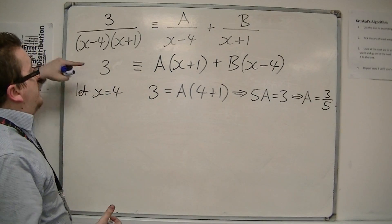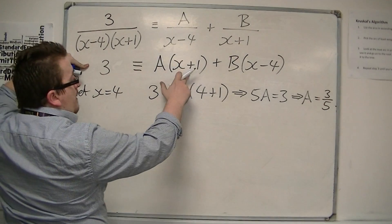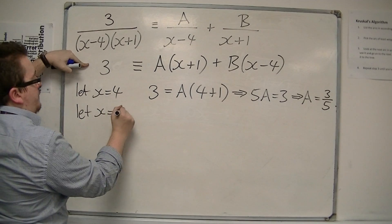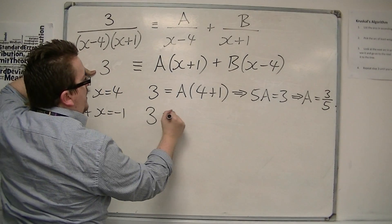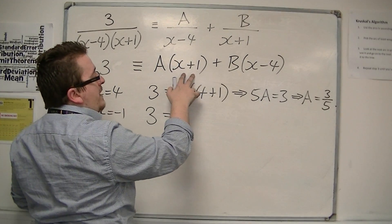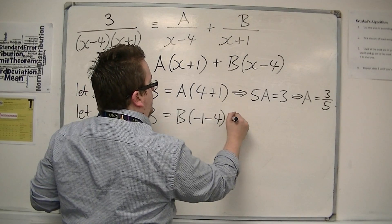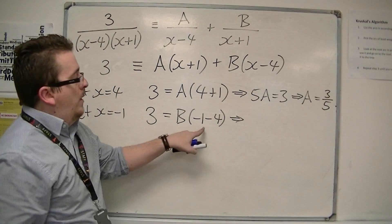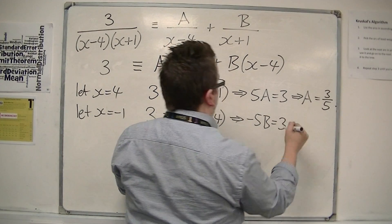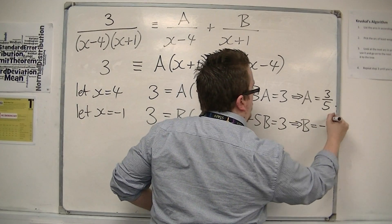So, if I now go back to this line, and I now say, well, I've tried x is 4, so the way to get rid of that bracket would be to try x equals minus 1. So, I would have 3 is equal to, well, that's gone, because that bracket is 0. I have b lots of minus 1 take away 4. Well, minus 1 take away 4 is minus 5, so I've got minus 5b is 3. So, that means that b is minus 3 fifths.